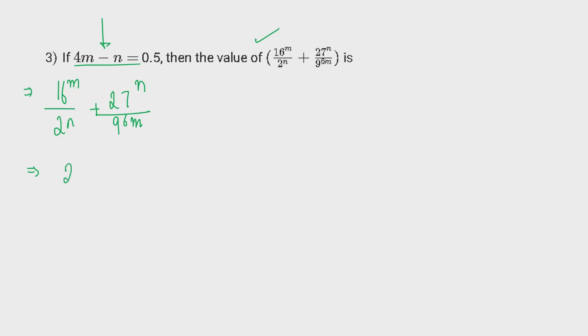16 can be written as 2 raised to the power 4 and 27 can be written as 3 raised to the power 3 and 9 can be written as 3 raised to the power 2. Powers get multiplied.